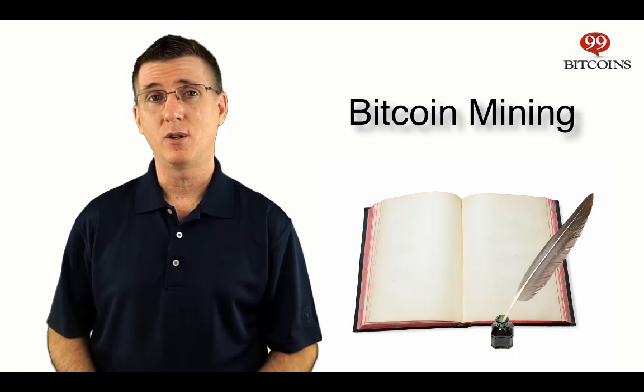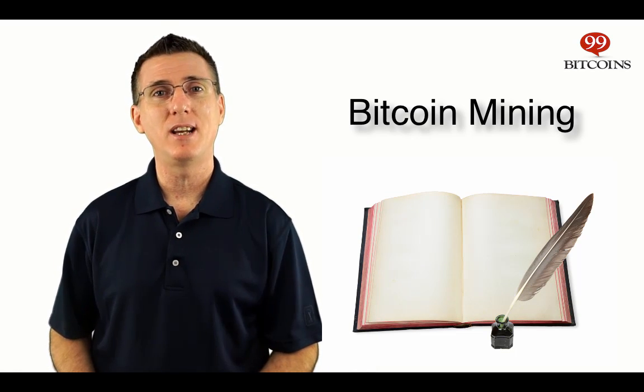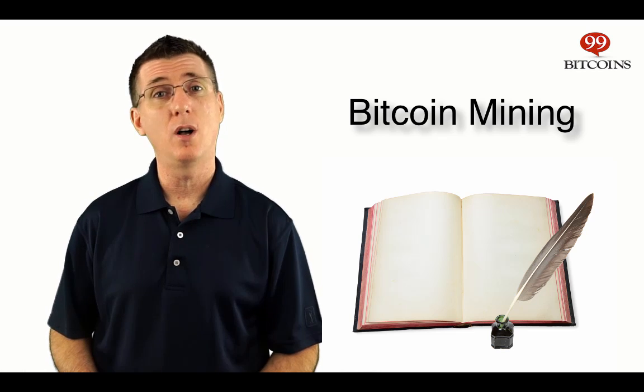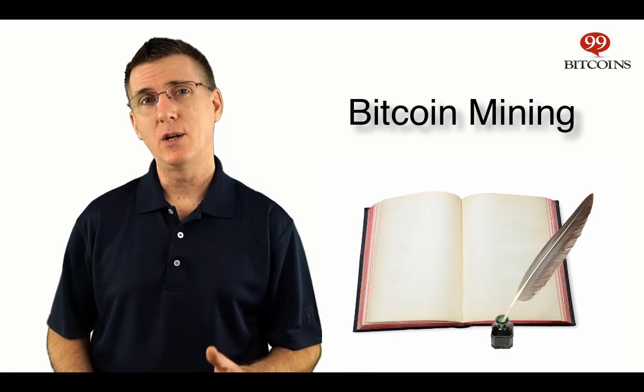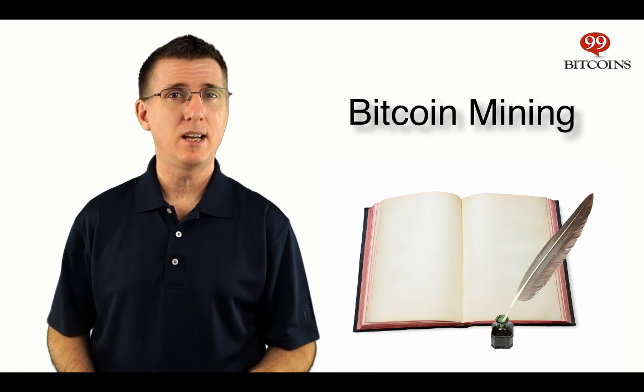In a nutshell, the Bitcoin protocol grants new Bitcoins every time someone adds a new page of transactions to the history book, also known as adding a block to the blockchain. However, it requires that you invest computational power to do this. Wait, what? What do I mean by computational power? And why is it needed?